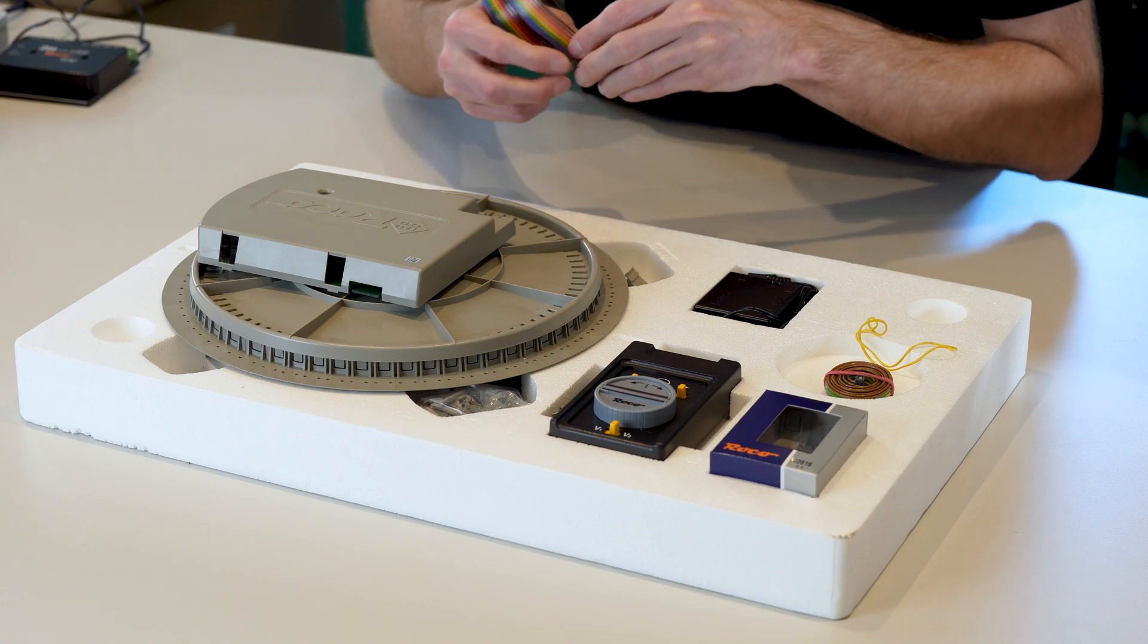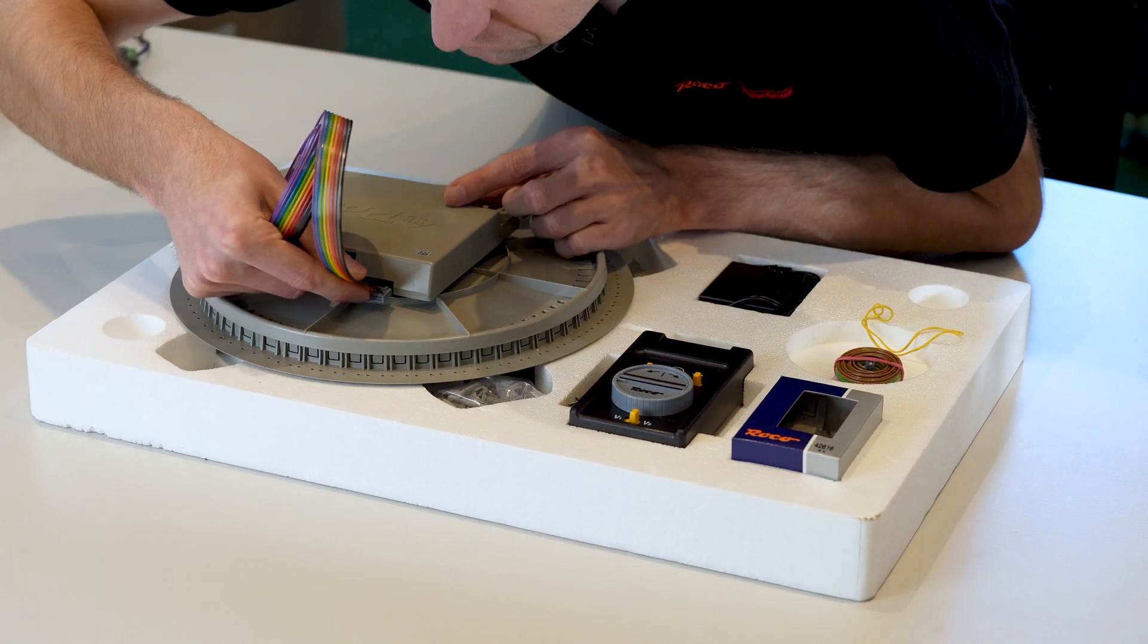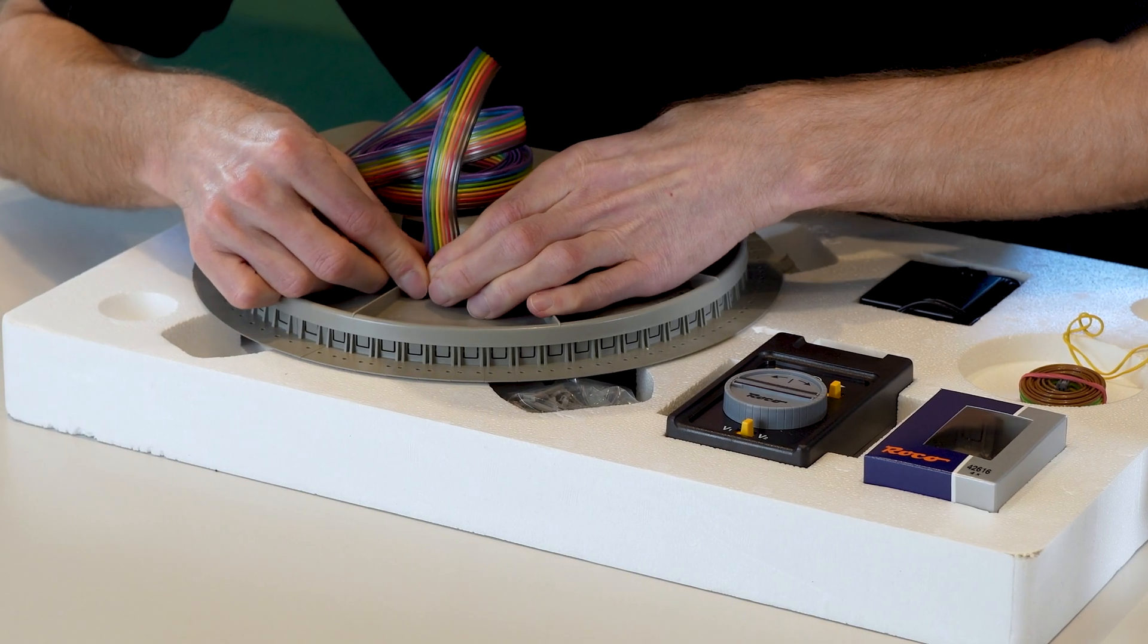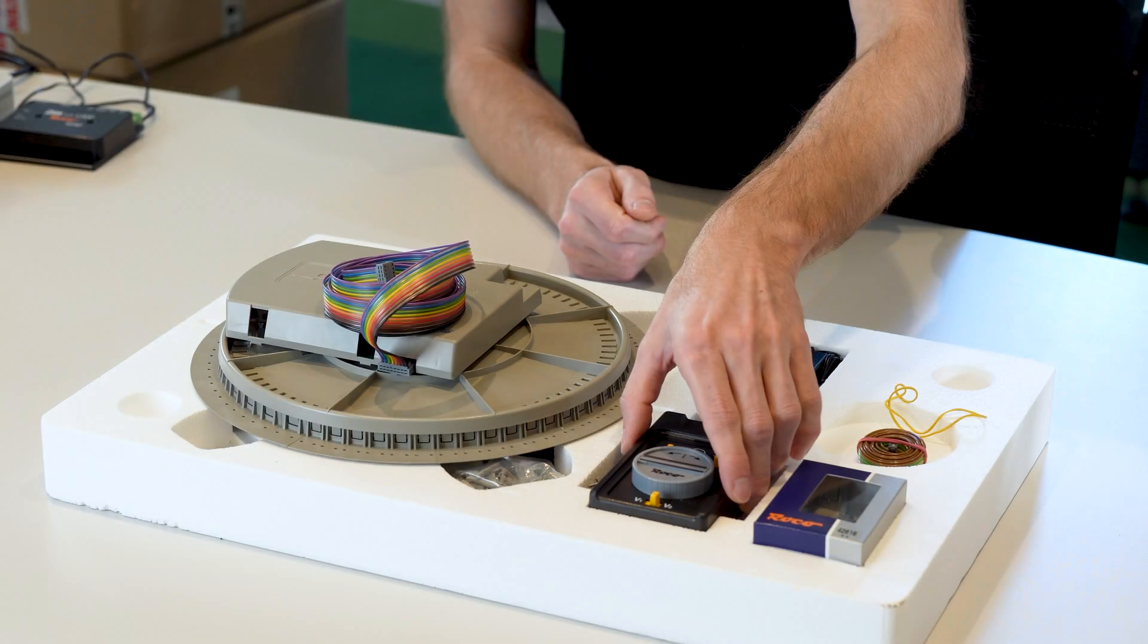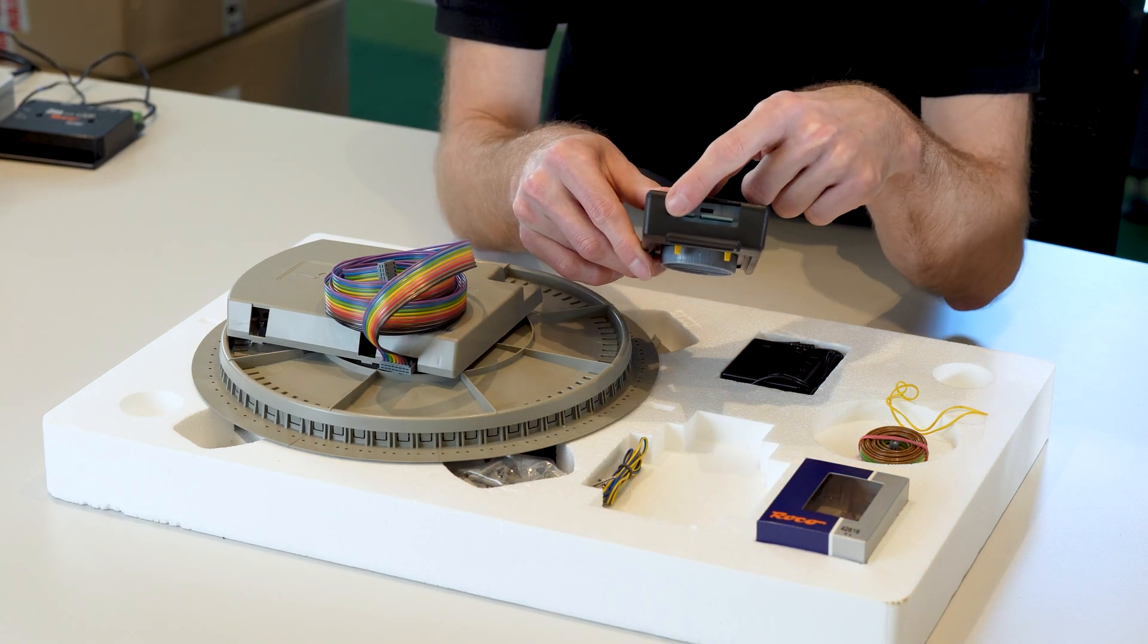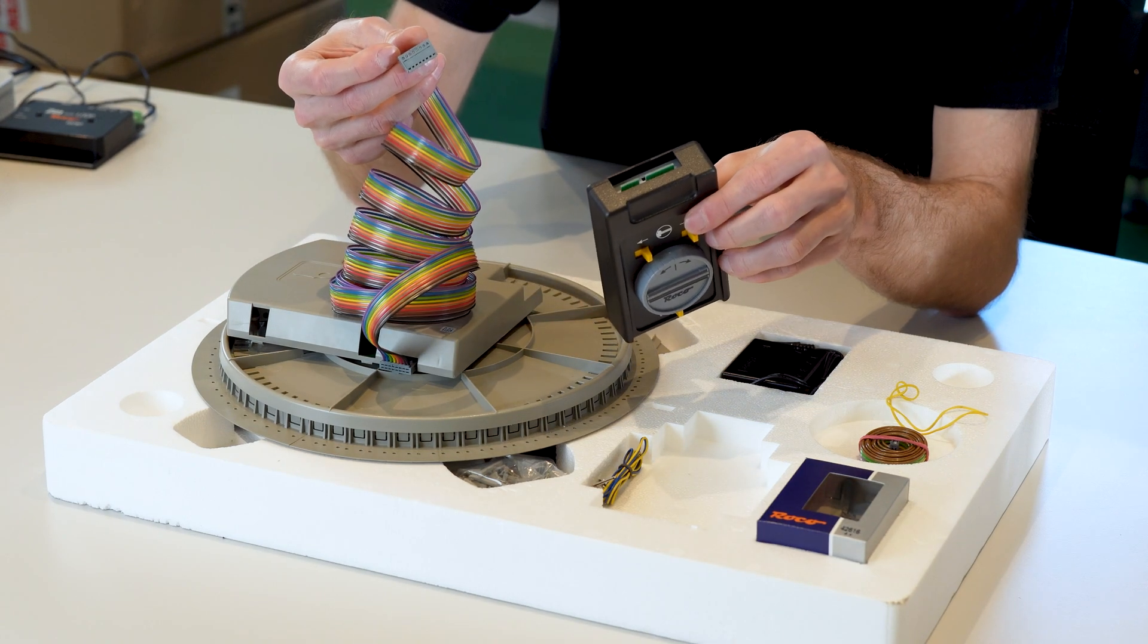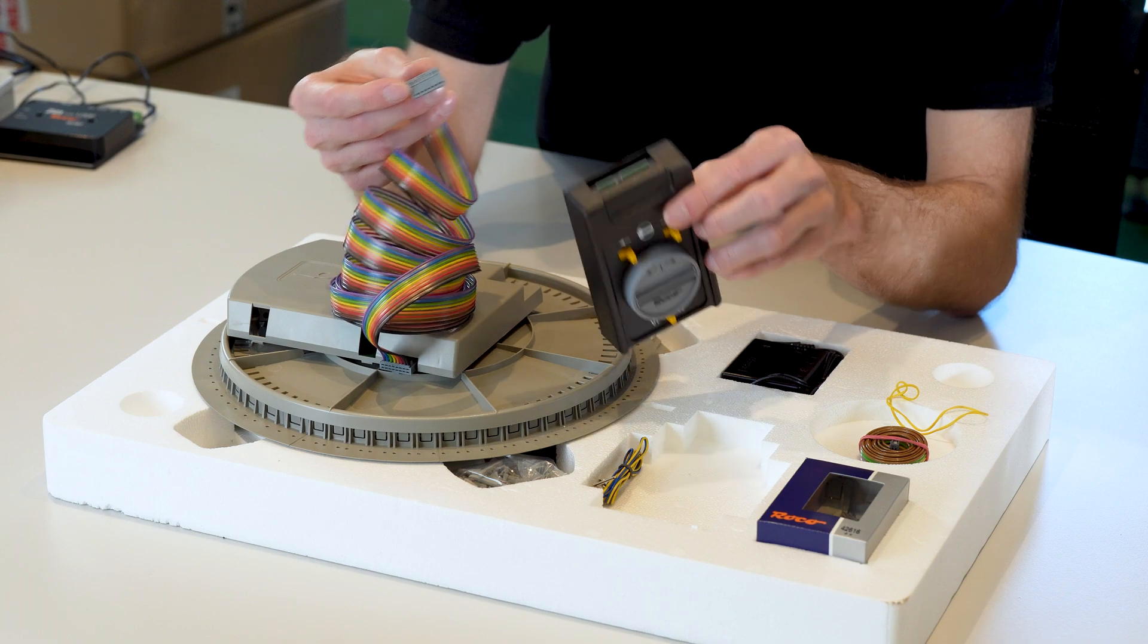Then we have our control unit with two connections up here. The other end of our connection cable is connected to the wide connection. The connection cable with a narrow plug is then connected to the second side. You just plug it in on the top here.